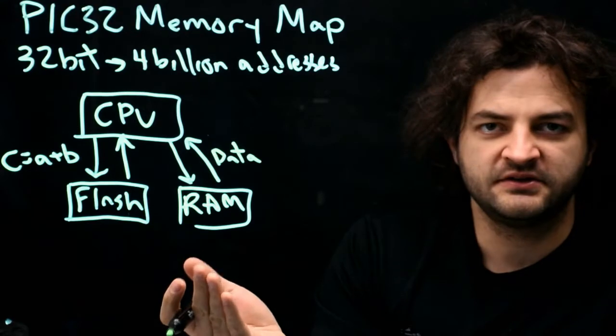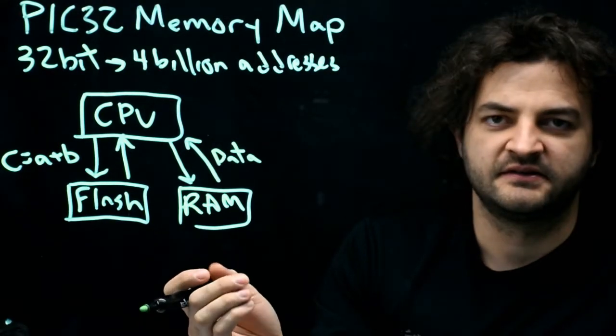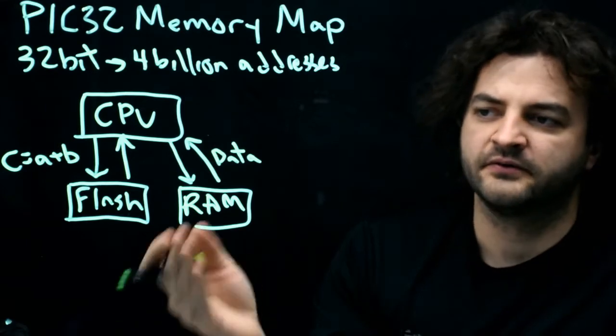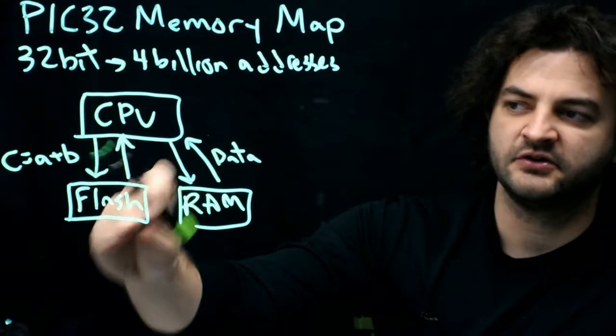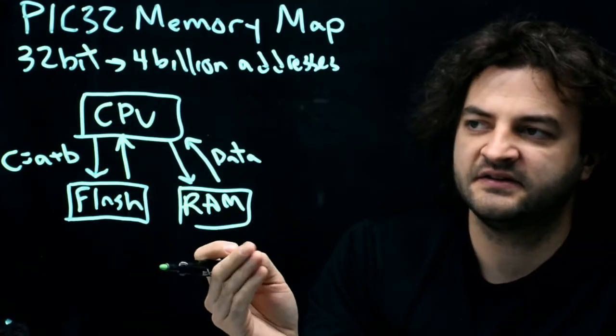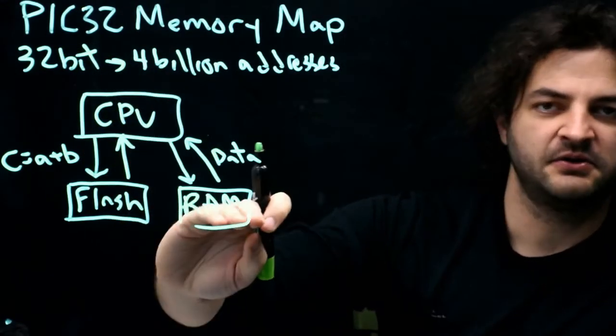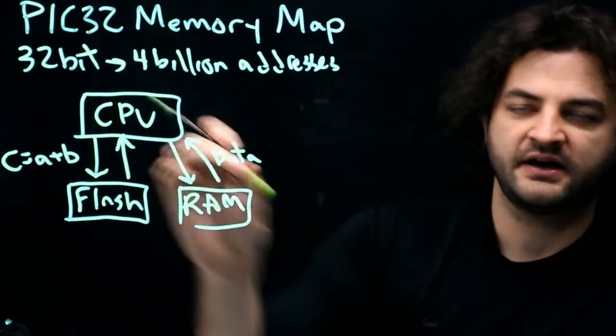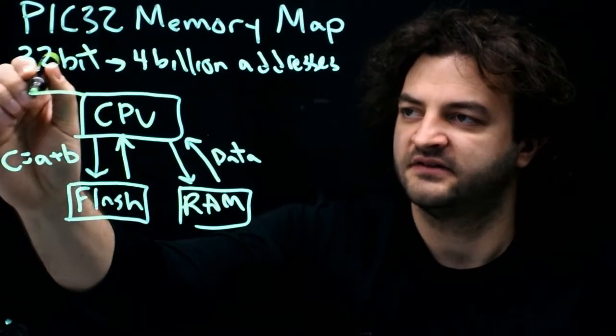One thing we can do to try to speed things up is recognize when are we doing things kind of like maybe over and over? When are we accessing the same part of RAM several times? When are we grabbing instructions that are maybe in a loop? Can we store them locally within the CPU so that the CPU will realize when it needs a variable for RAM, maybe I don't have to go all the way to RAM and get it back. I've already got it located inside of my local memory inside of the CPU.